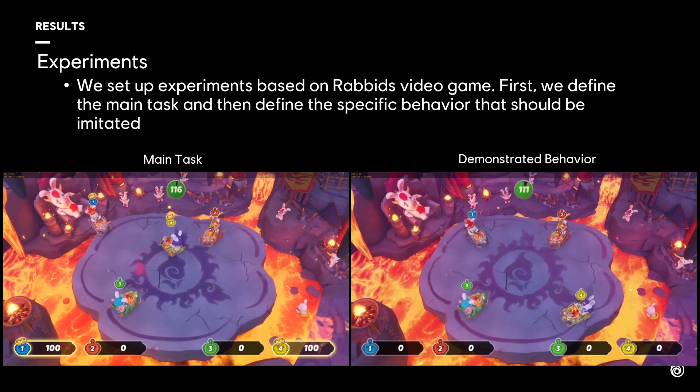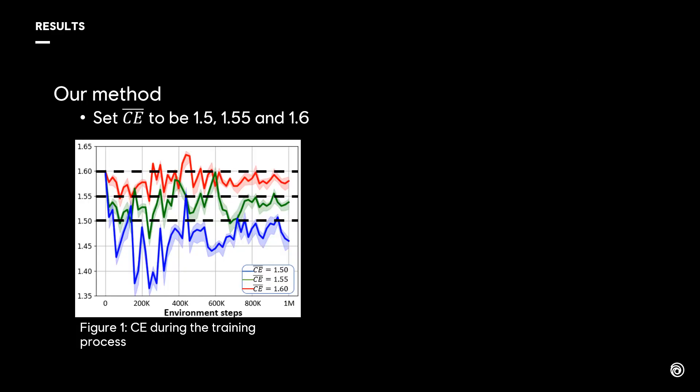The goal of the agent is to imitate the demonstrated behavior while completing the main task. We evaluate our method by setting three different expected cross entropy values of 1.5, 1.55, and 1.6.